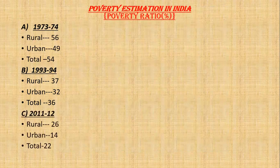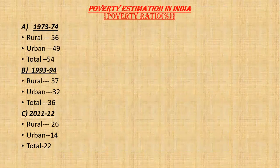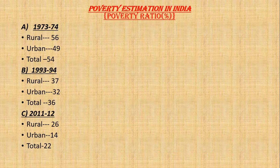Then in 2011 and 12, the latest data, rural area is 26%, urban 14%, total 22%. You can see there is a substantial decline in poverty from 1973 to 2011 — in rural areas from 56% to 26%, and in urban areas from 49% to 14%. The overall total declined from 54% to 22%. There are many reasons behind that which you will study further.